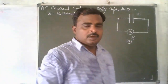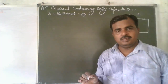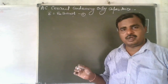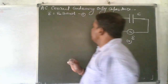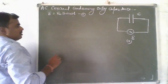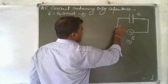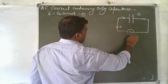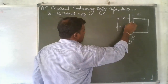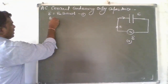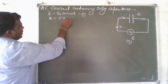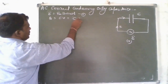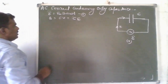Now we will see the value of current — whether it leads or lags the EMF. Suppose this is the current I. First, the current charges the capacitor. The total charge stored in the capacitor is Q equal to CV, and here V is the EMF E, so Q equal to C into E.